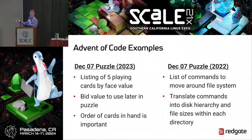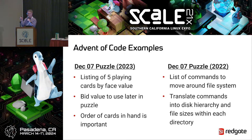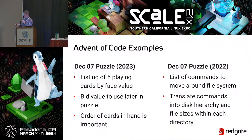You can go to Advent of Code and look at the content and puzzles for any of the years they've done it — this has been going for 12 or 13 years. I picked Day 7 for both years, which was totally a coincidence. The December 7th puzzle for 2023 is really simple input — it represents a hand of five playing cards and then a value. The puzzle was to split all these things out, understand the cards, and do some addition and multiplication. The order of the cards in the hand, left to right one through five, is important to solving the puzzle.